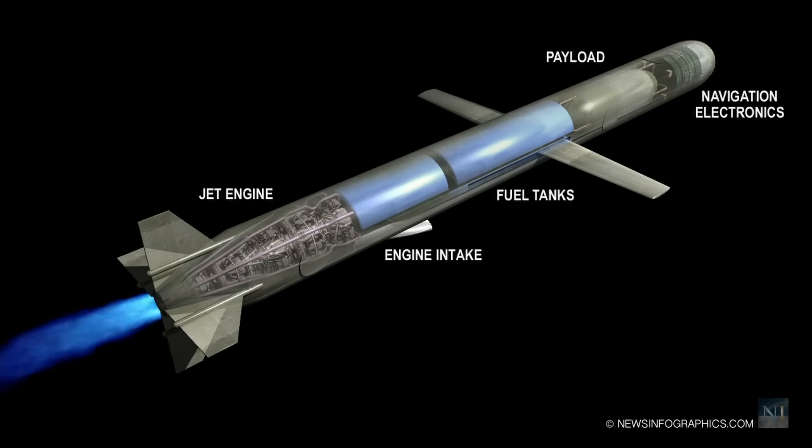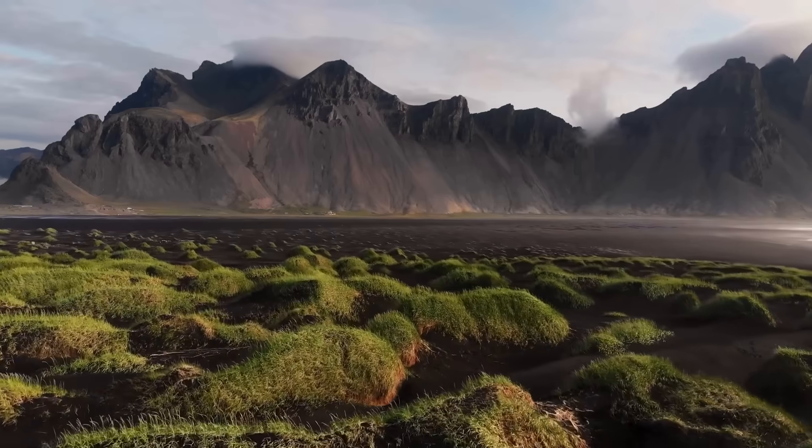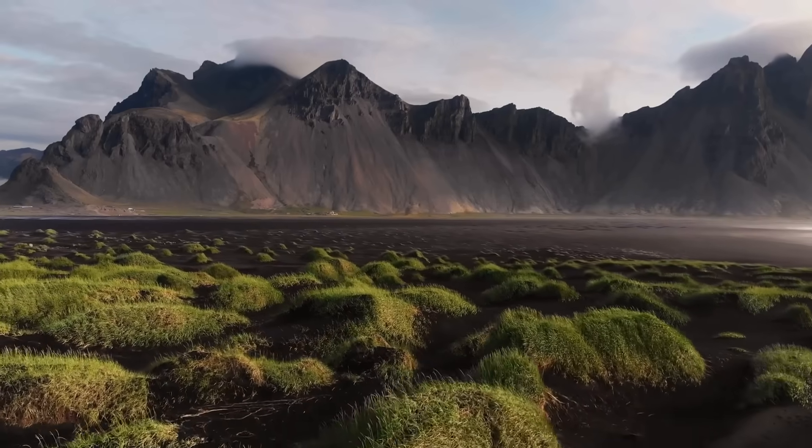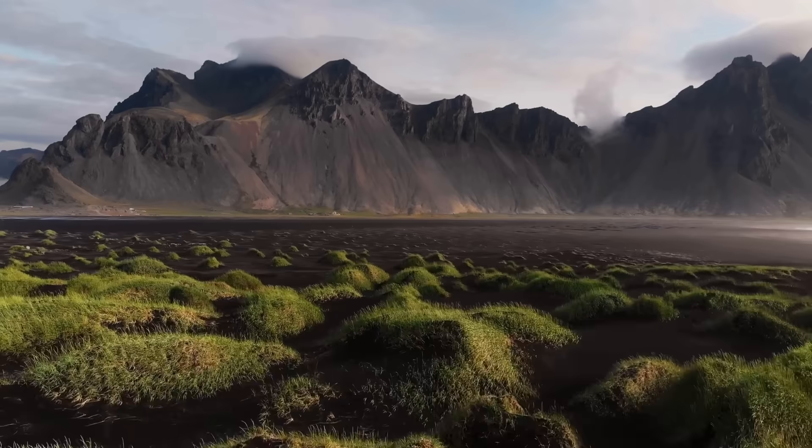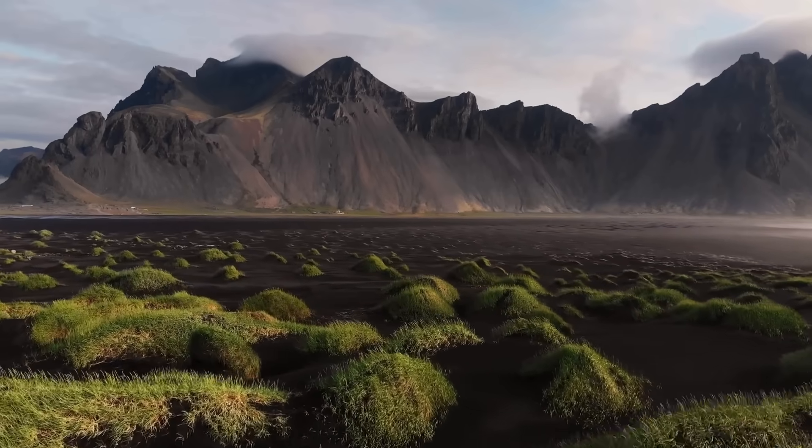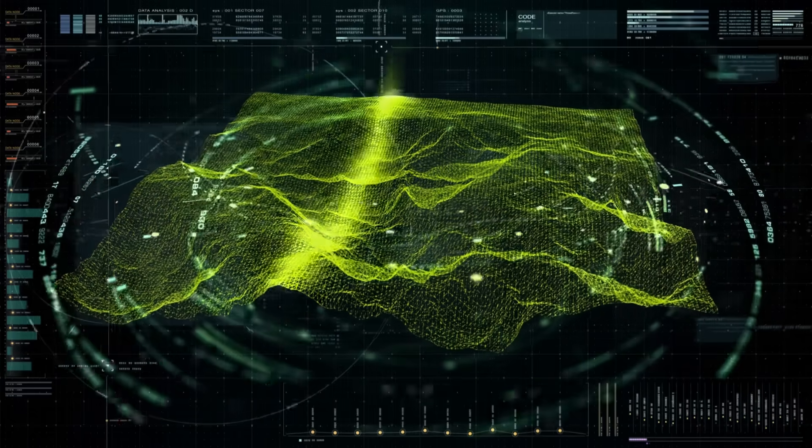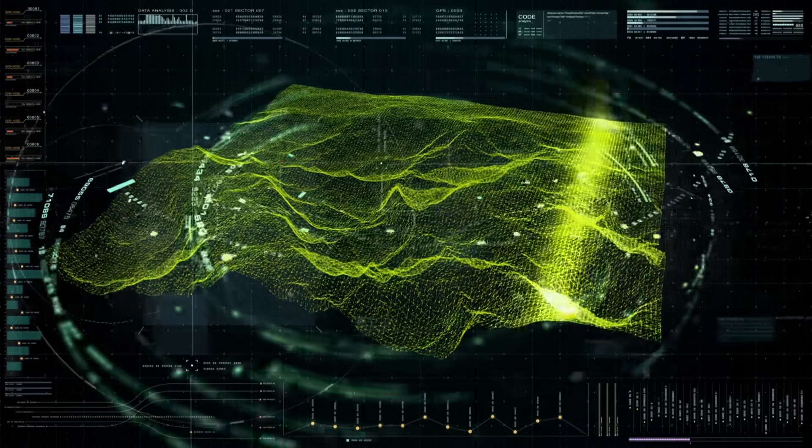Cruise missiles use a variety of navigation systems. One common system is inertial guidance. Another is GPS guidance. And some missiles use a system called terrain contour matching. That is, using drones or spy satellites, the geography and contours of the terrain above which the missile has to fly is mapped in advance. The data is then fed into the missile system before launch.